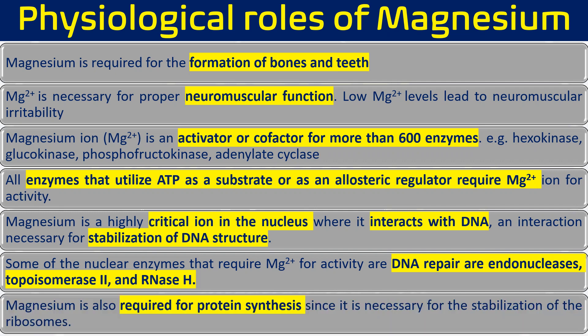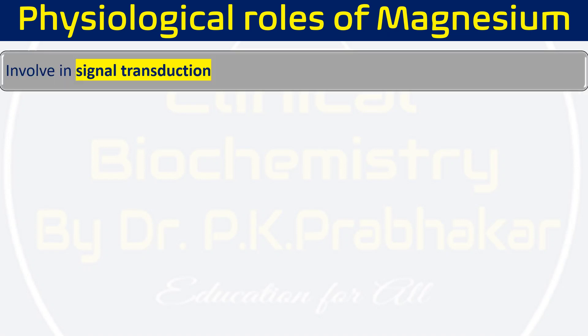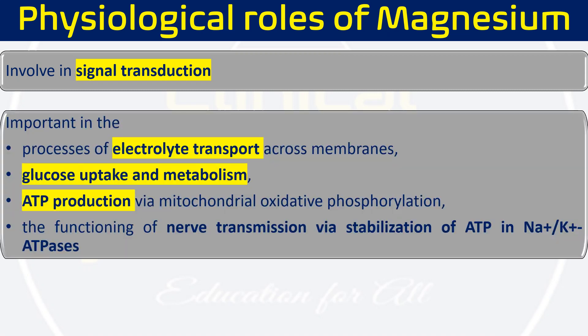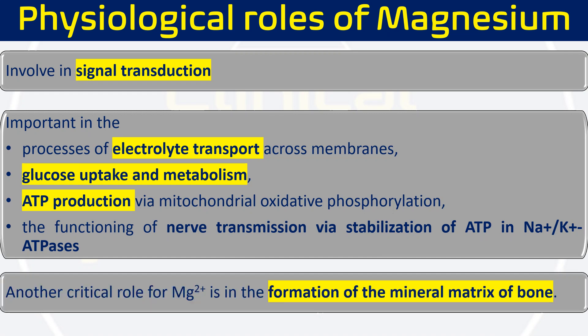Magnesium is required for protein synthesis since it is necessary for the stabilization of ribosomes — the protein factory. So for the translation process, we require magnesium. Magnesium is also involved in signal transduction through neurons, electrolyte transport across the plasma membrane for glucose uptake and metabolic processes, ATP production via oxidative phosphorylation in the mitochondrial inner membrane, and nerve transmission via stabilization of ATP in the sodium-potassium ATPase.